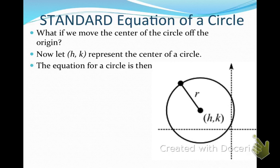Normally circles aren't always centered at the origin. So what if we move the center of the circle off the origin? Let's represent the new center of our circle with an ordered pair, and we're going to call it h and k — those are the x and y values of the center.